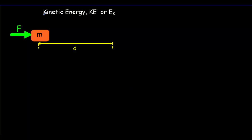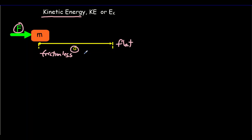Let's begin our first proof — a formula for the kinetic energy of a body. We're going to apply a force, cause this mass to move a certain distance d, but in such a way that there are no other changes in energy except for kinetic energy. We want to do this on a flat surface so there are no changes in height, on a frictionless surface so no heat is produced, and with no springs attached. The only change will be an increase in kinetic energy.